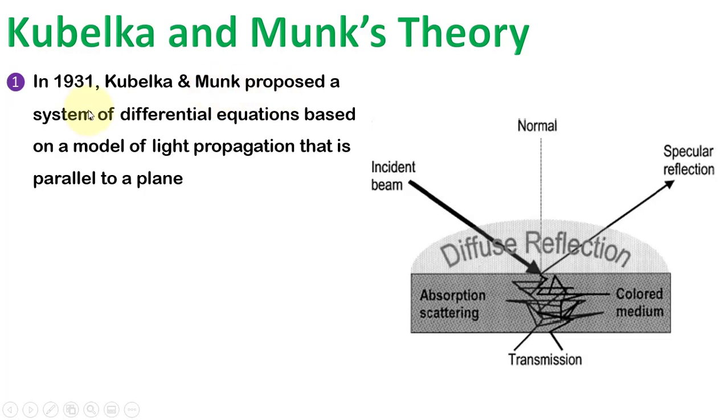In 1931, Kubelka and Munk proposed a system of differential equations based on a simplified model of light propagation in a dull-painted layer that is parallel to a plane. The medium is considered isotropic and homogeneous.